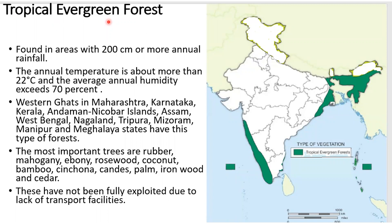First, let us see about tropical evergreen forests. As the name implies, the leaves of the trees found in evergreen forests never shed in a particular season. That is why they are called evergreen forests. These forests are found in areas with 200 centimeters or more annual rainfall. The annual temperature is about more than 22 degrees Celsius, and the average annual humidity exceeds 70 percent.